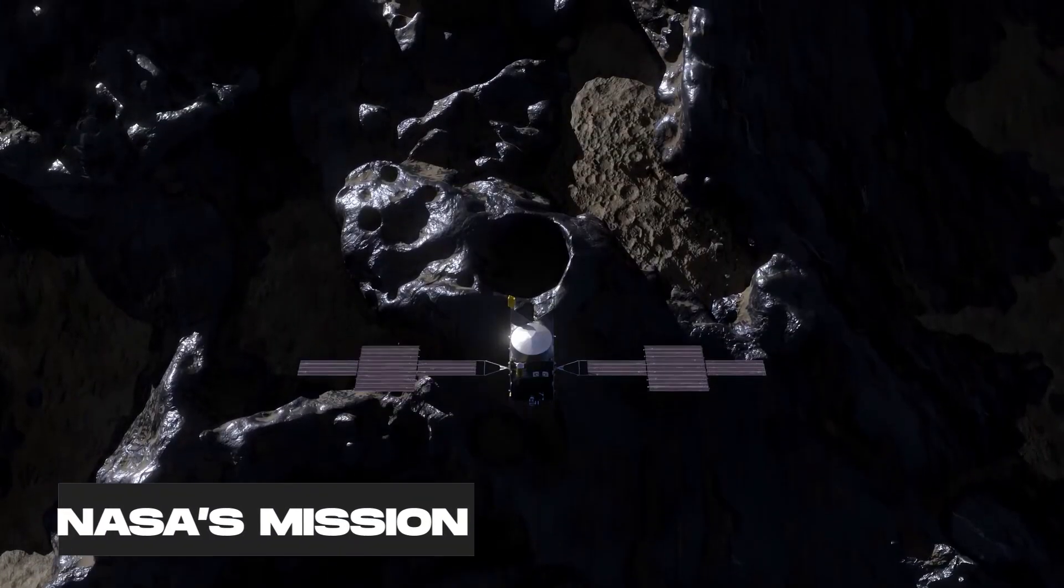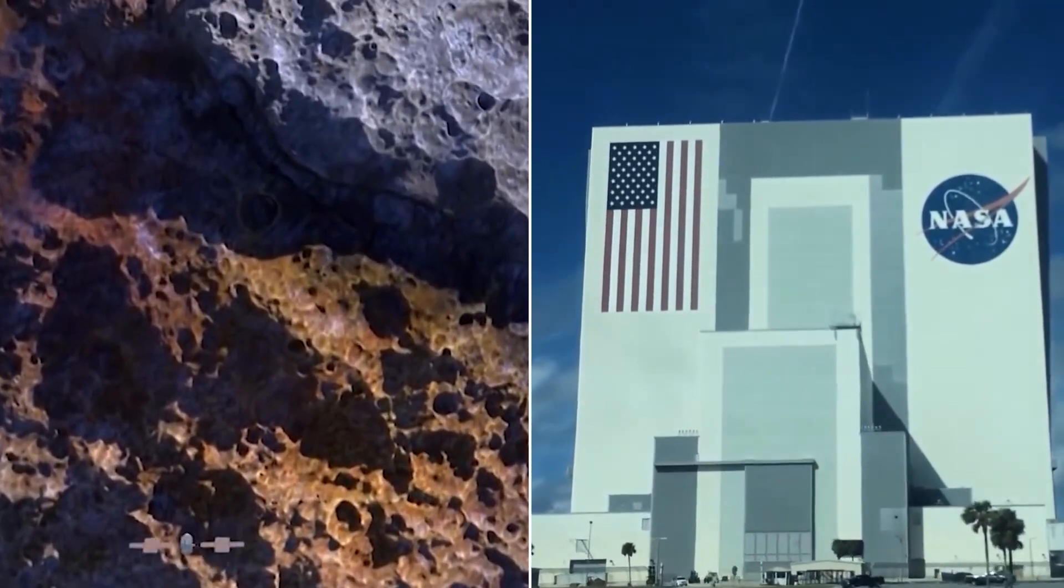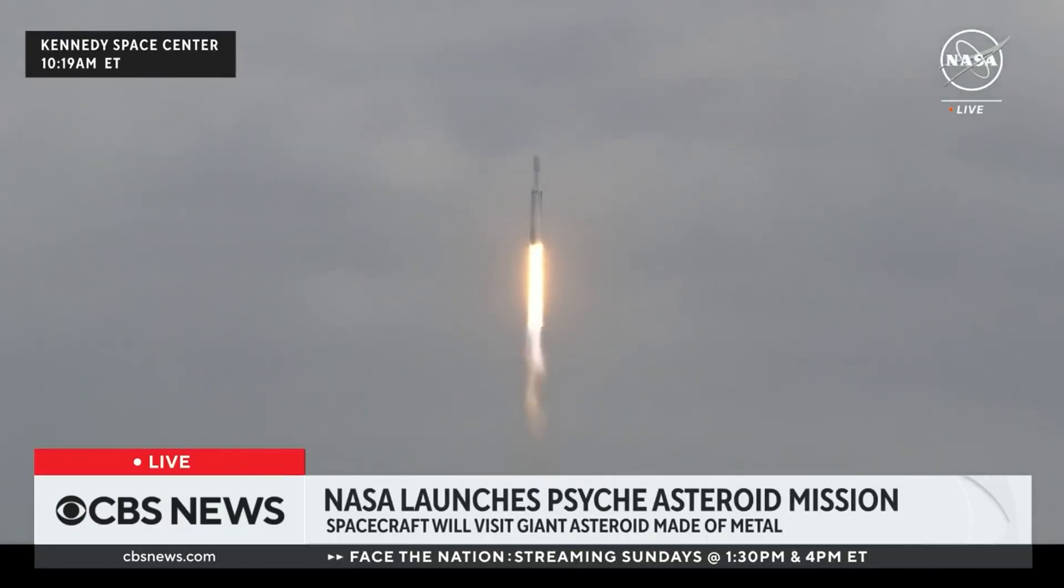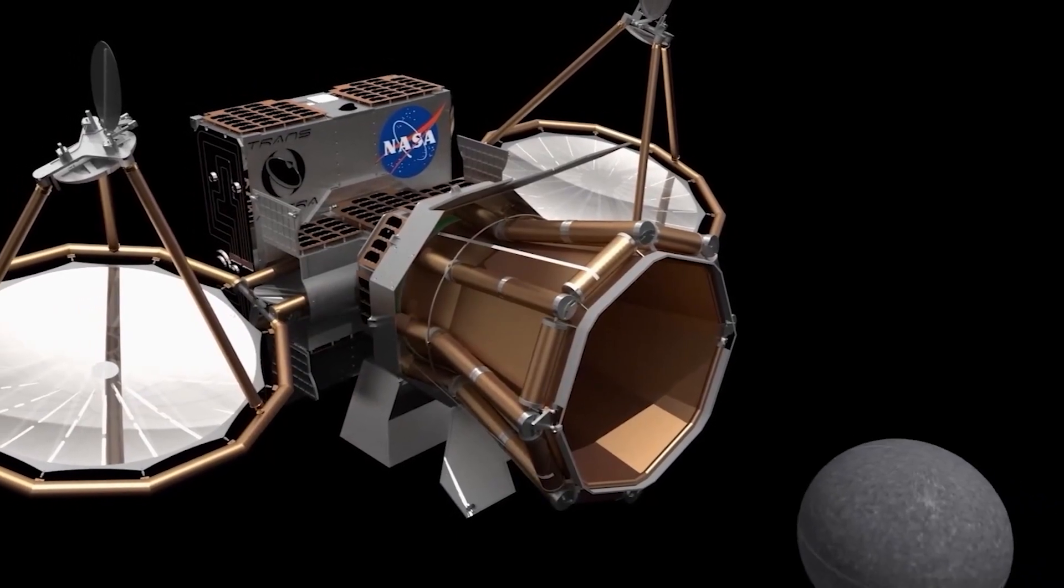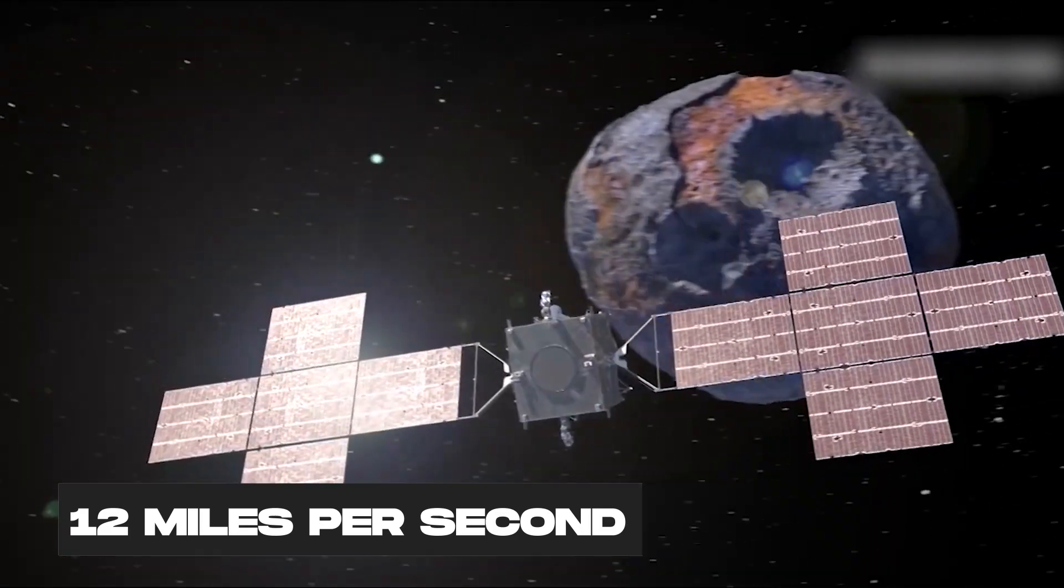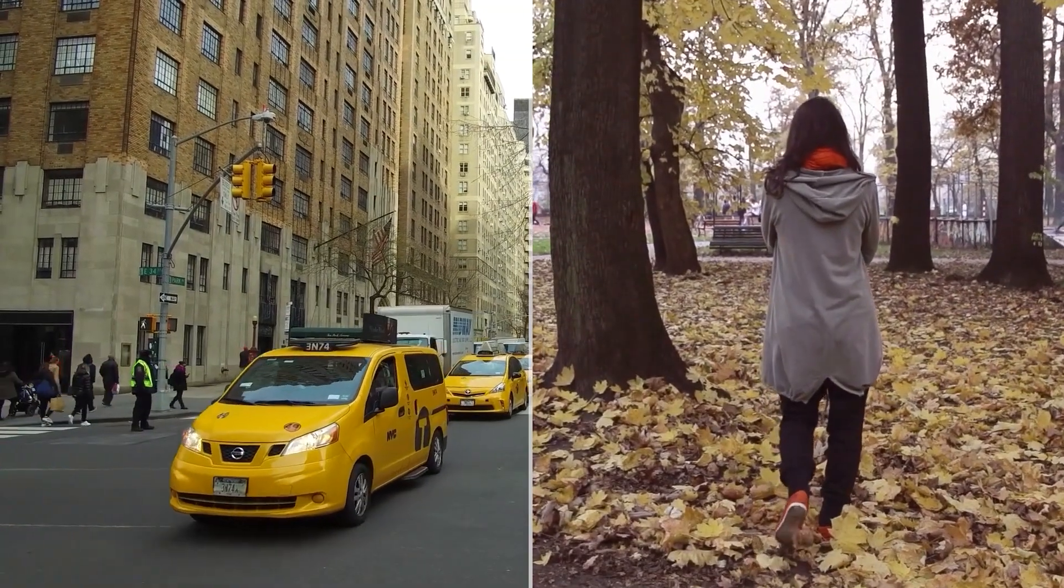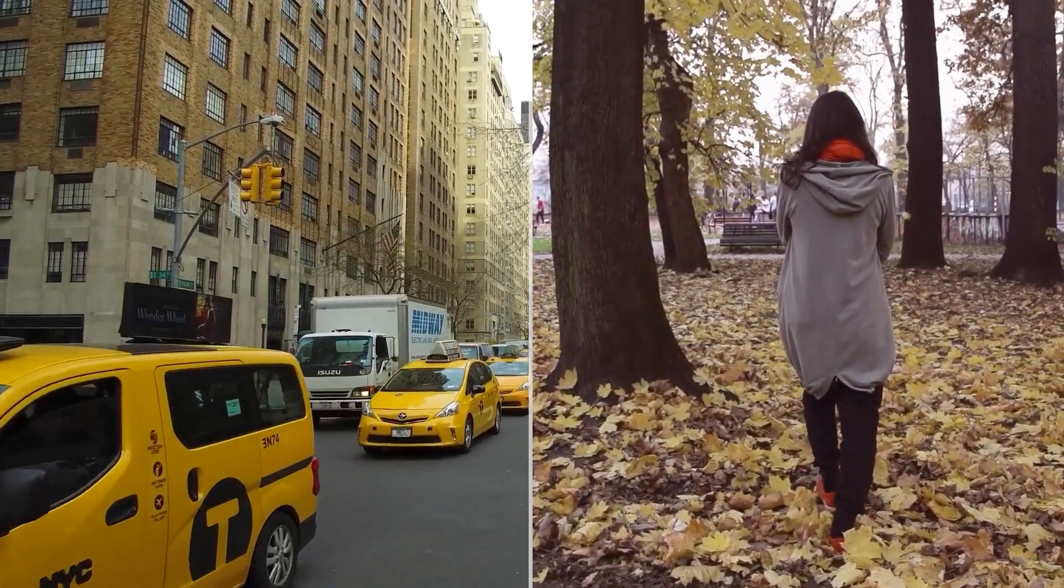So what does that mean for NASA's mission? It means that NASA has to deal with some serious challenges. Firstly, they've got to launch their spacecraft at just the right time and place to catch up with this speedy asteroid, which zips through space at 12 miles per second. It's like trying to hail a taxi during rush hour, not exactly a walk in the park.